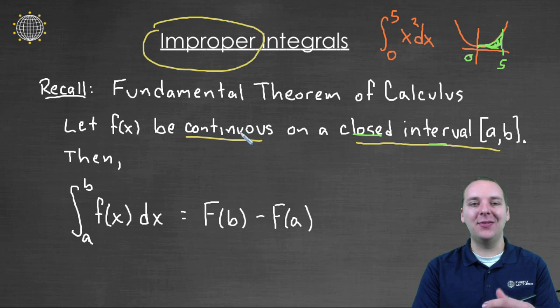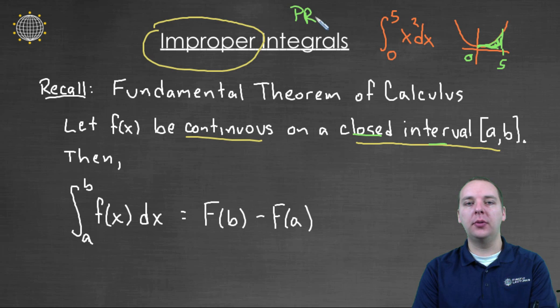X squared doesn't have any asymptotes or anything like that on the interval 0 to 5. So this type of integral here, we would call proper. This is a proper integral that I've just written up here.